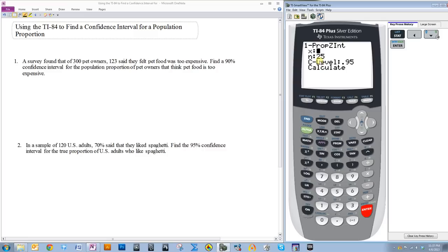The easiest thing to determine is N. N is the sample size. X is the amount that responded positively to the thing you were looking for. And C level is the confidence level.